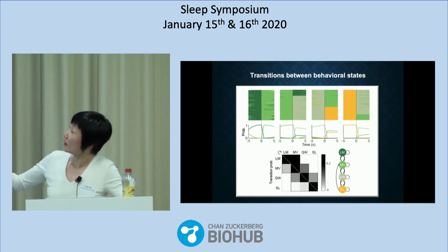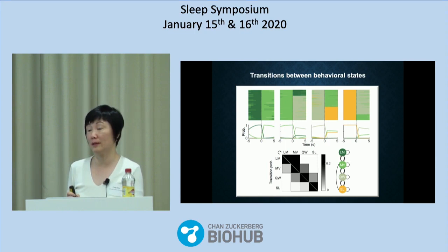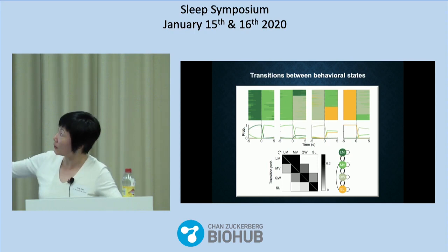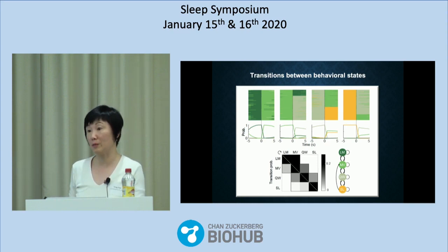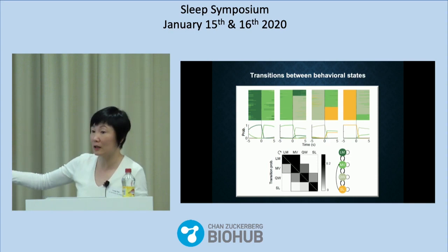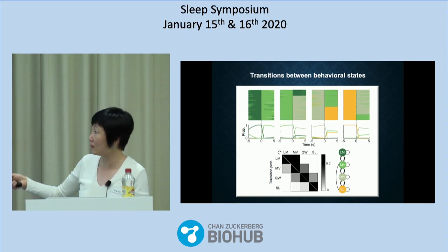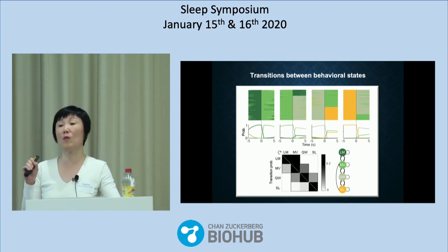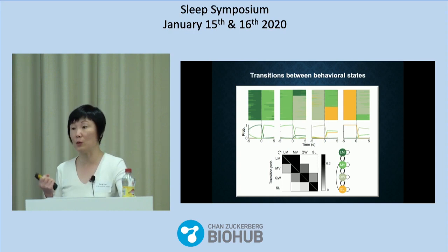When we looked at the transitions across these states, they're not random at all. If you start in locomotion, they always transition into non-locomotor movement — we have never seen a mouse running one moment and falling asleep the next. If you start in non-locomotor movement, they either go back to running or become quietly awake; they don't fall asleep right away. If we put these four states in a single chain, most transitions are between neighboring states. The only exception is that occasionally they wake up and go into movement right away, skipping quiet wakefulness. Brain arousal and motor activity tend to change gradually rather than abruptly.